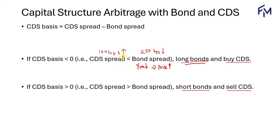For the CDS spread, when the CDS spread increases, the buyer of the CDS will gain given that there is higher credit risk implied in the CDS contract. The buyer of the protection will gain when there is higher credit risk. So the strategy would be to buy CDS.